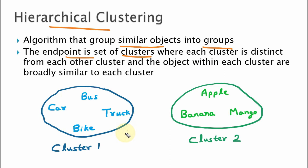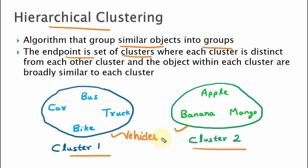As you can see here, there are two clusters. The first cluster has car, bus, truck and bike, and the second cluster has fruits like apple, mango and banana. These two clusters are different from each other — the first cluster has all vehicles and the second cluster has fruits. The objects in cluster 1 are similar to each other as they are all vehicles, and in cluster 2, they are all fruits. So cluster 1 and cluster 2 are different from each other, but the objects within each cluster are similar to each other.